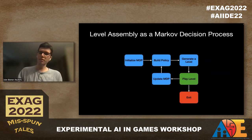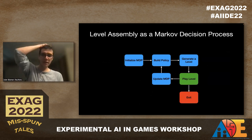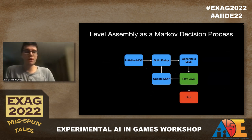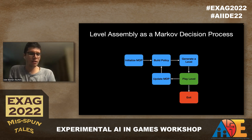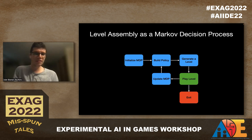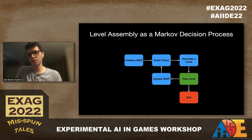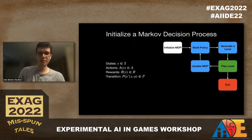Our system works with a Markov decision process. We start by initializing the MDP, then build a policy with that MDP. With that policy, we build a level, then give that level to the player to play. The player can either quit after they've played or choose to play again. Then we update the Markov decision process, and this cycle goes on until the player quits or ideally beats the game.